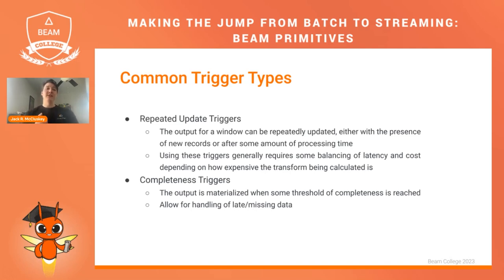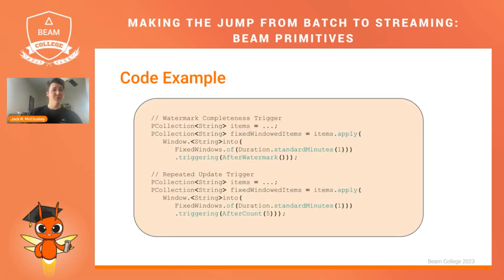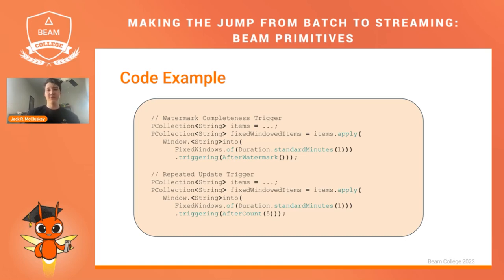Another common type is the completeness trigger, where output is materialized when some threshold of completeness is reached — usually the watermark advancing past the end of the window. This is also how late or missing data is handled: when something arrives late, your pane is now more complete and you re-emit. In code for watermark completeness, you apply a window-into transform and set triggering to after the watermark. For a repeated update trigger, the same fixed windows are used but instead of triggering after the watermark, it fires every five elements — so you get five more elements and re-emit the pane.